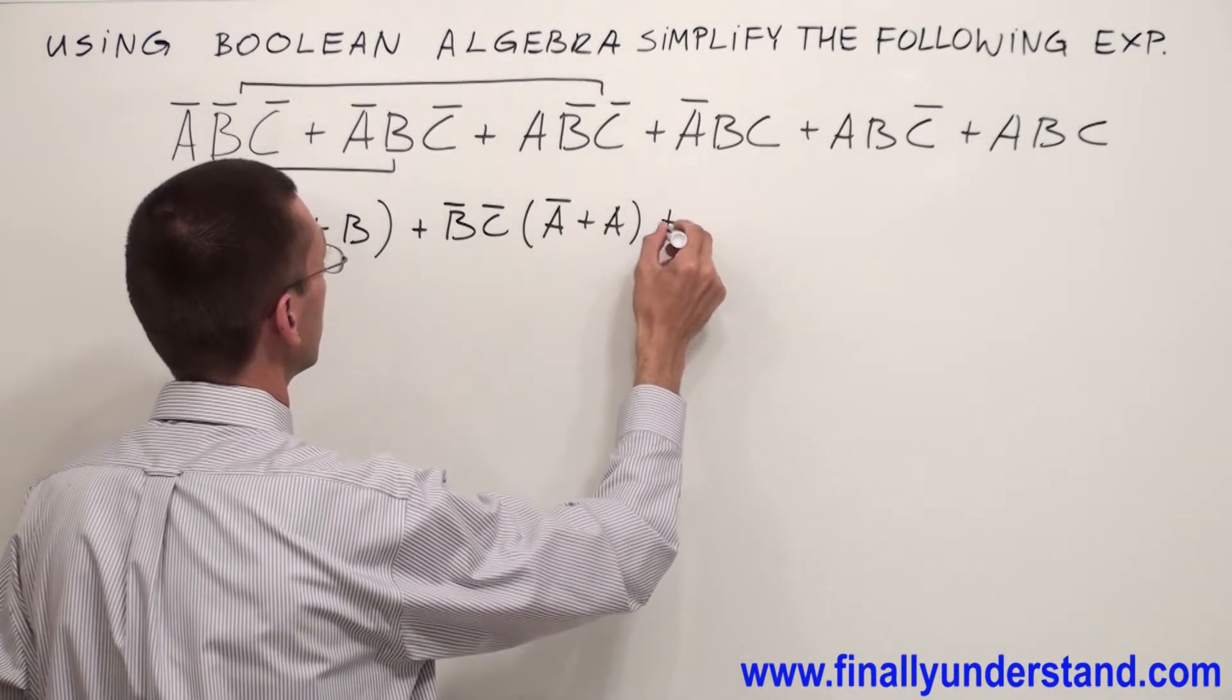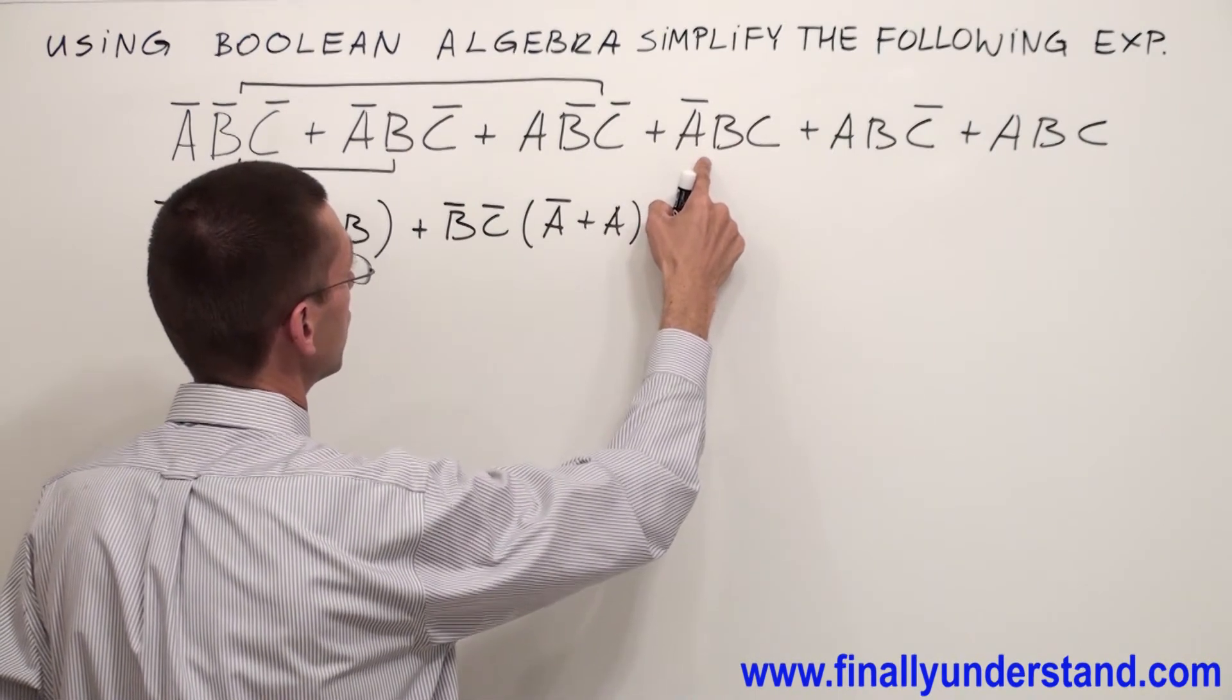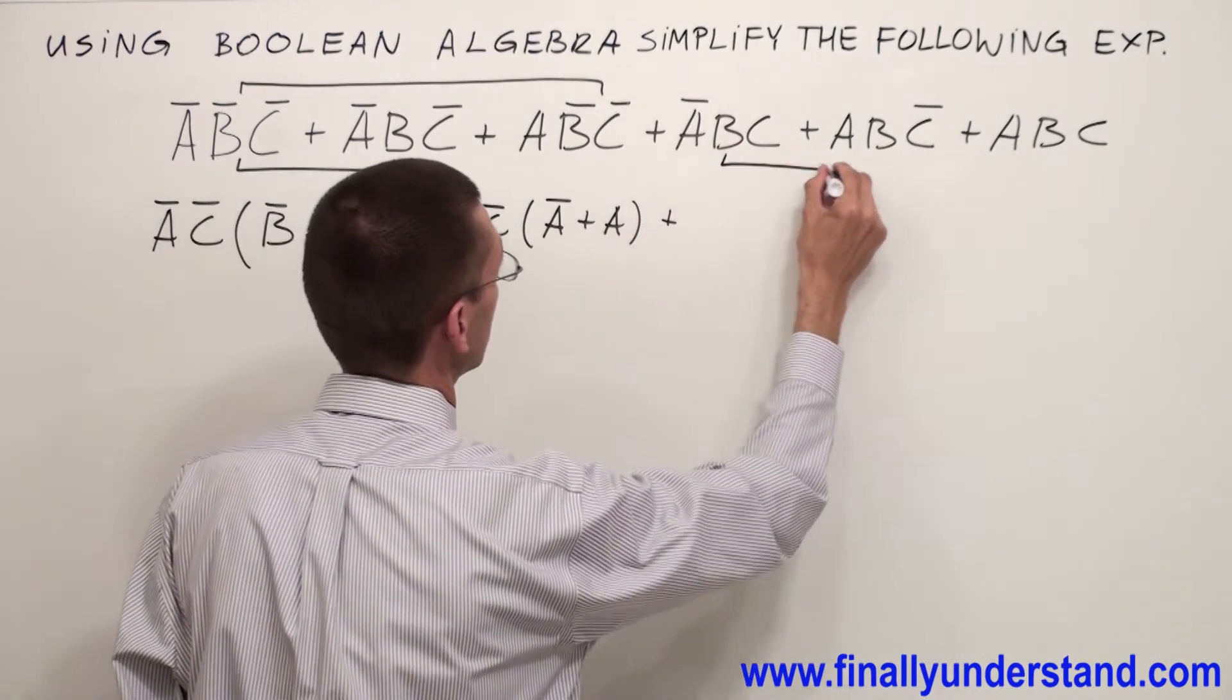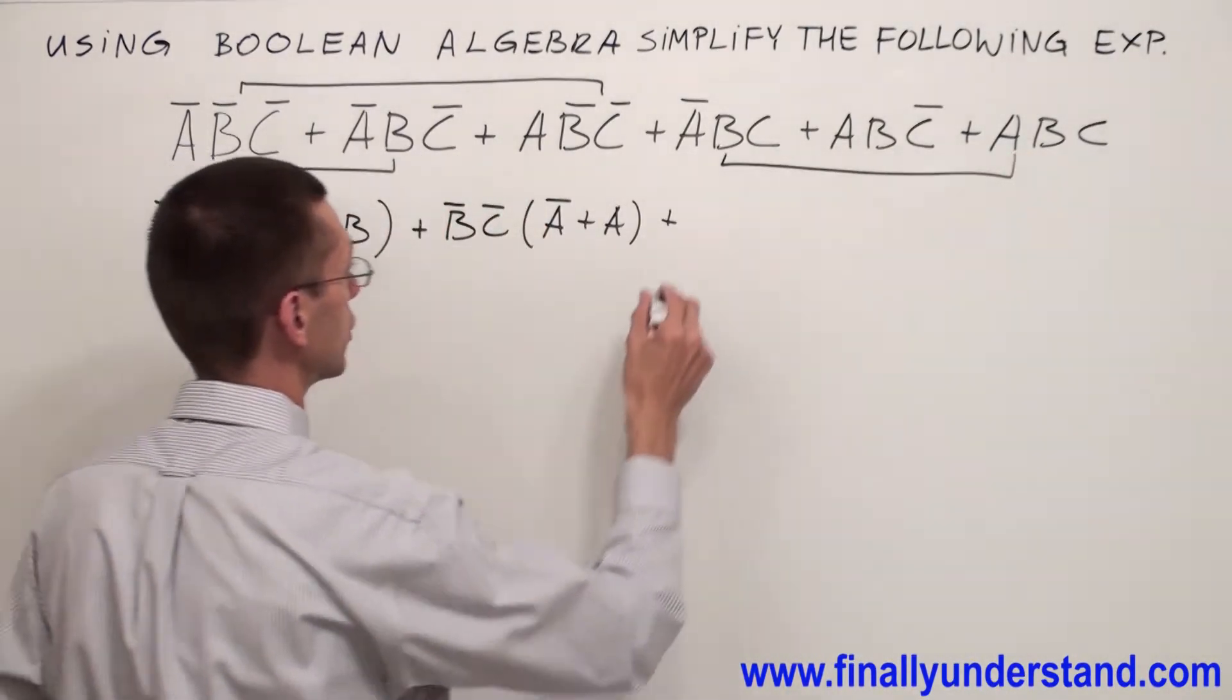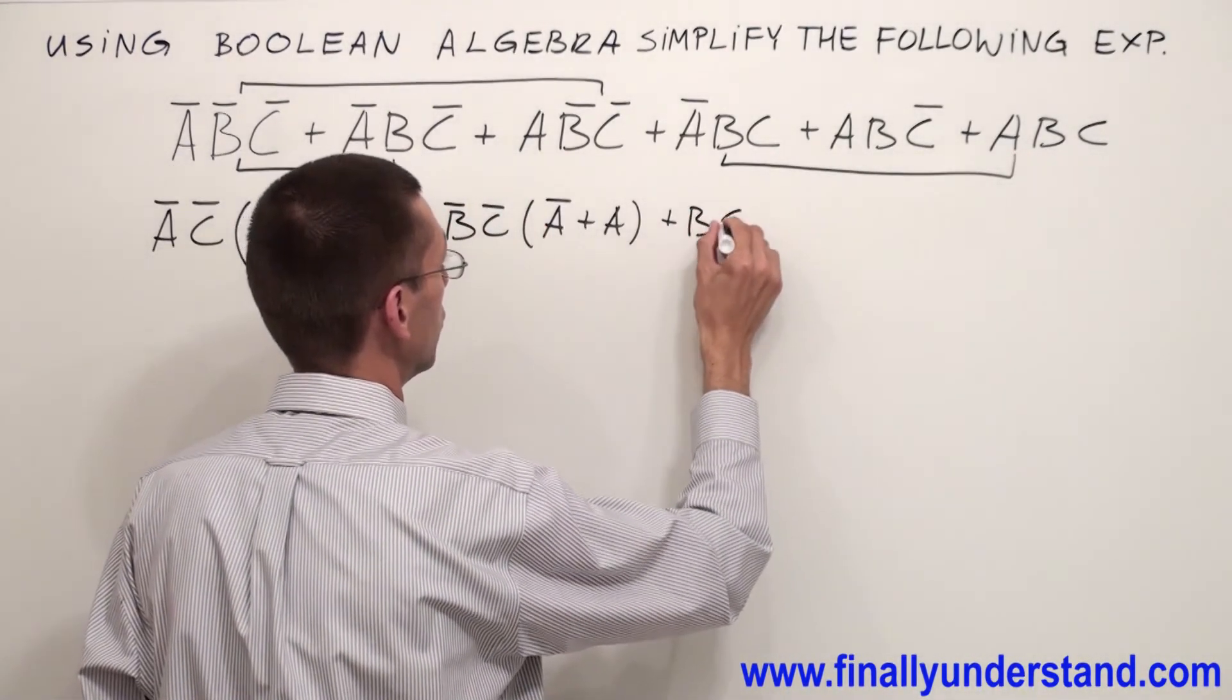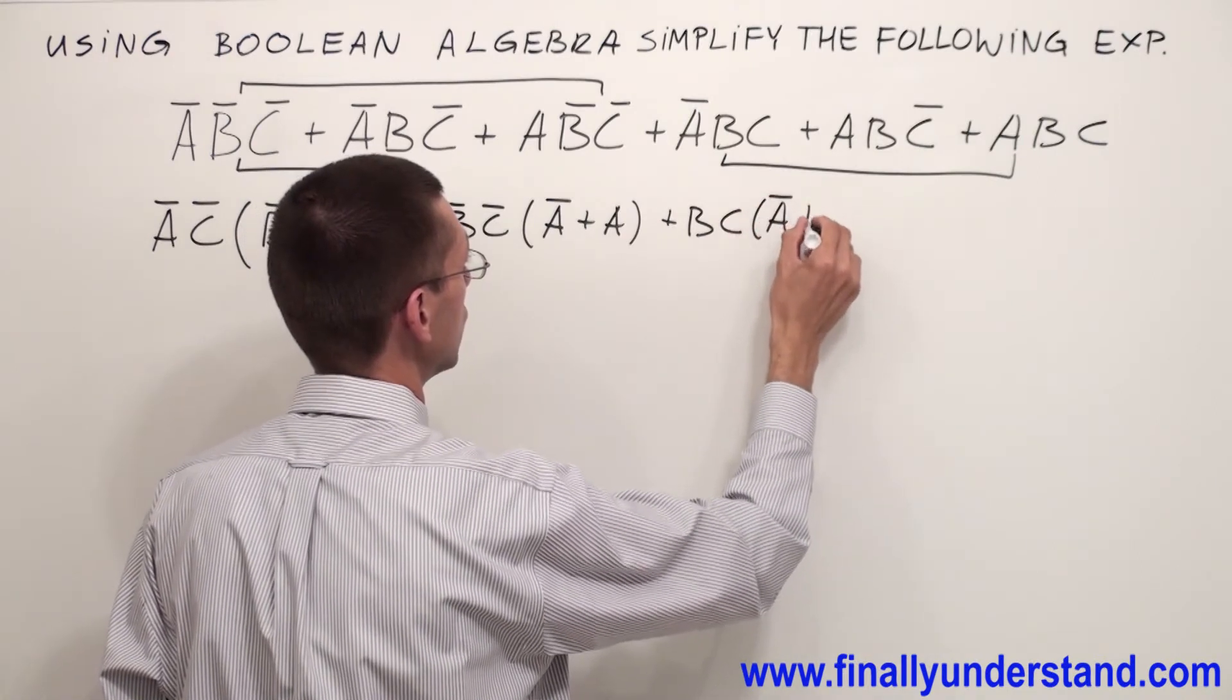Now I have common variables in these two terms, which are BC. And inside of the parenthesis I'm going to have A̅ or A.